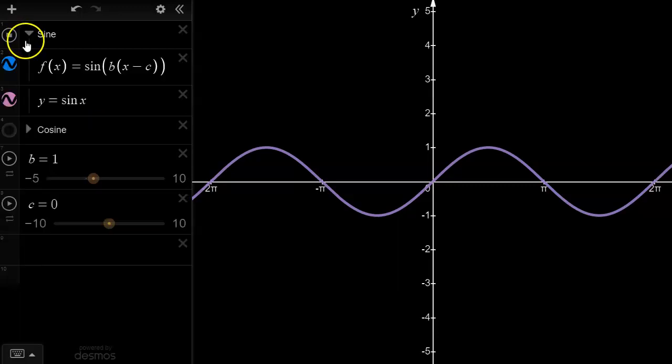I have set up the graphing application to graph y equals sine b times x minus c where b equals 1 and c equals 0 to start with. That means that the pink curve that you see in front of you is the graph of y equals sine x.